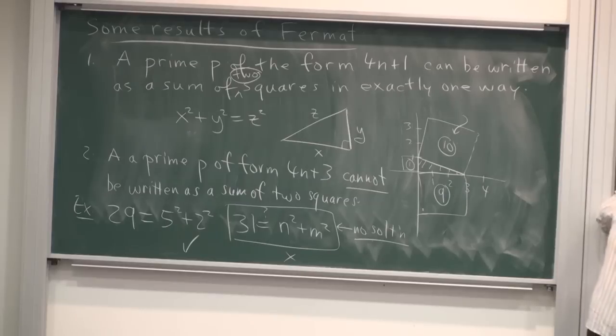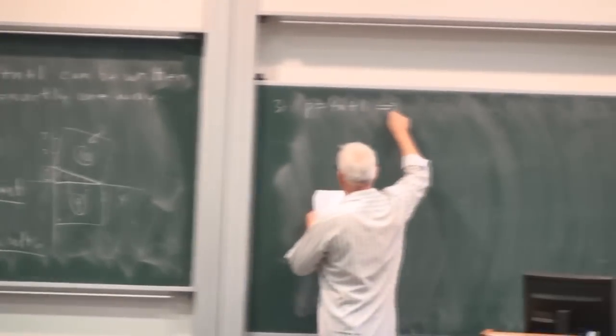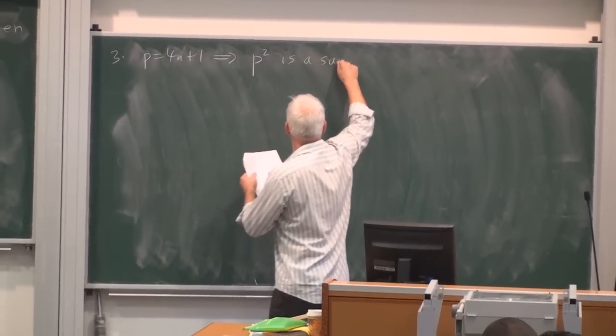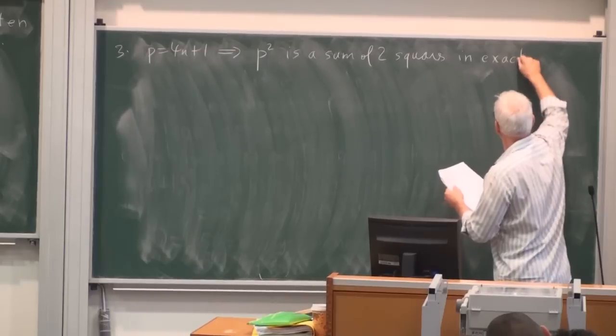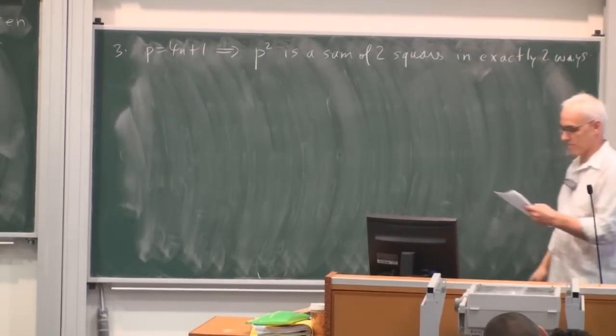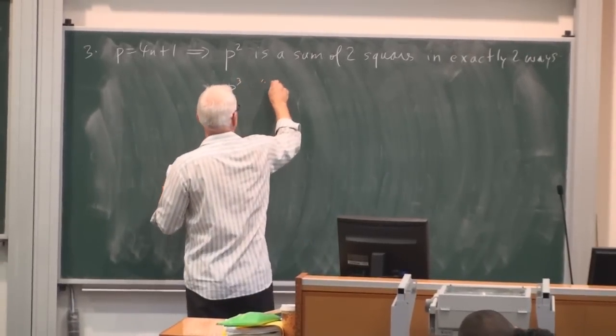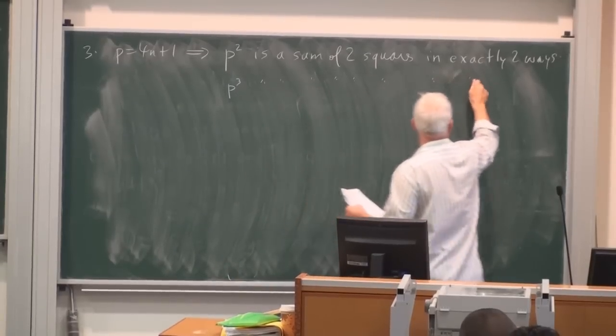Okay? So this one, no solution to this one. There is a solution to this one, not this one. And interestingly, there's exactly one solution, even if the prime is very, very big. Well, he discovered a little bit more in this direction. He investigated further and discovered that if p equals 4n plus 1, in that case, p squared is also a sum of two squares in exactly two ways. And p cubed is a sum of two squares in exactly three ways.